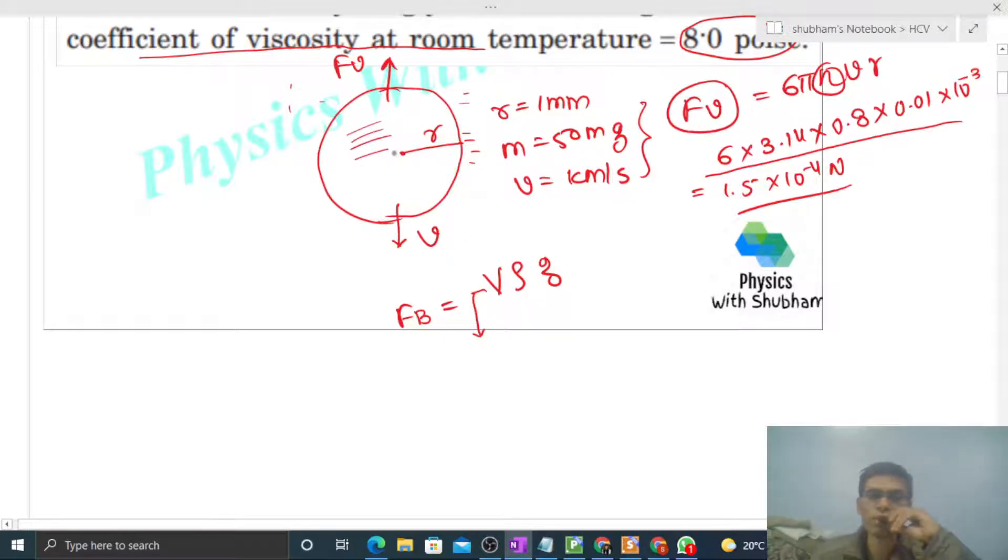The volume displaced is the volume of the metal sphere: (4/3)πr³ times density of glycerin times g. Just put the values: (4/3) × π (3.14) × r³, where r is 10^-3.